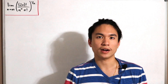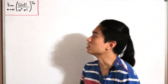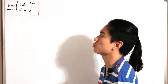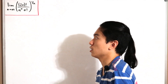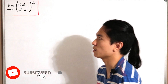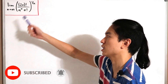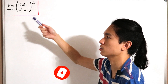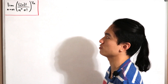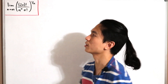Welcome back to another video. In today's video we have the following limit: the limit as n approaches infinity of 2n factorial divided by n to the power n multiplied by n factorial, and that entire expression raised to the power 1 divided by n.